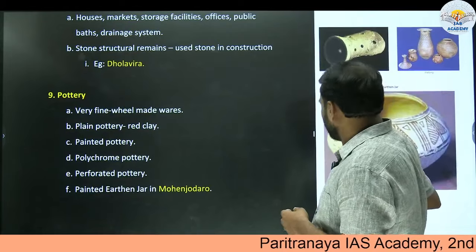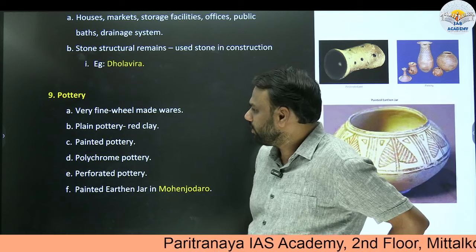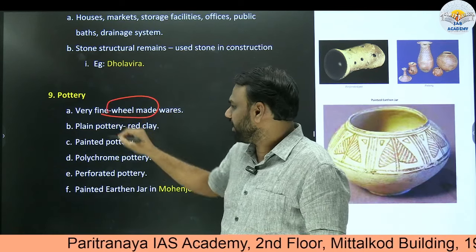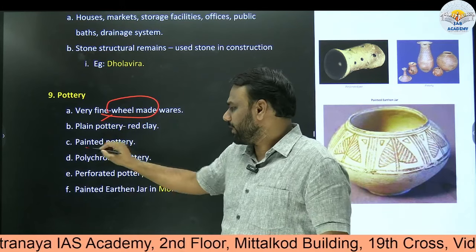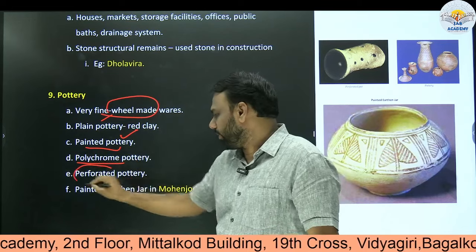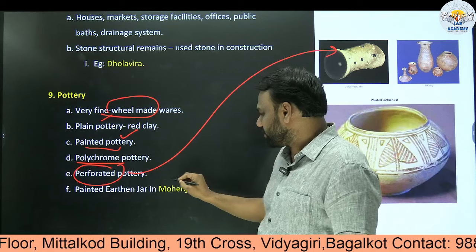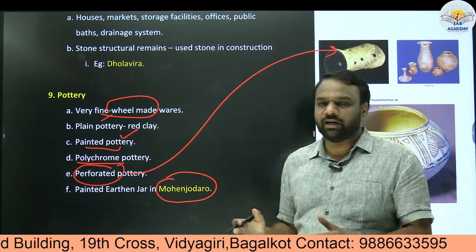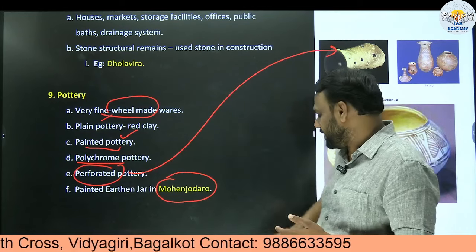Next, pottery. There are different kinds of pottery which the Indus Valley civilization prepared using a fine wheel. There was plain pottery without any kind of painting or images. Next, painted pottery was there. Polychrome pottery with multiple colors. Next, perforated pottery. And there was a painted earthen jar found in Mohenjo-daro. These examples indicate different kinds of pottery were prepared during Indus Valley civilization.